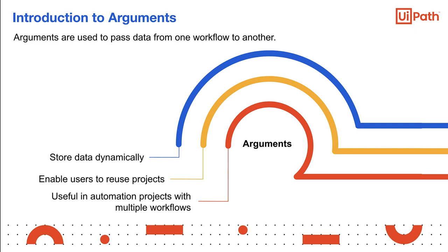Arguments are used to pass data from one workflow to another by storing the data dynamically. They are similar to variables as they store data and pass it on. However, the variables pass data between activities while arguments pass data between workflows. So arguments enable the users to reuse automation projects. Hence, they can be accessed outside the workflows in which they are defined and are useful in automation projects consisting of multiple workflows.